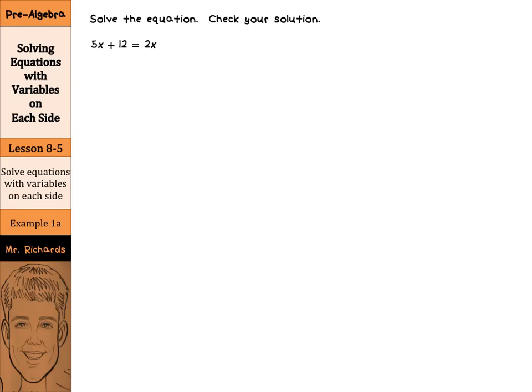When we look at our first equation, 5x plus 12 equals 2x, it's a little unusual because we actually have variables on both sides. So what we need to do is to be able to get all of the variables over to just one of the sides.